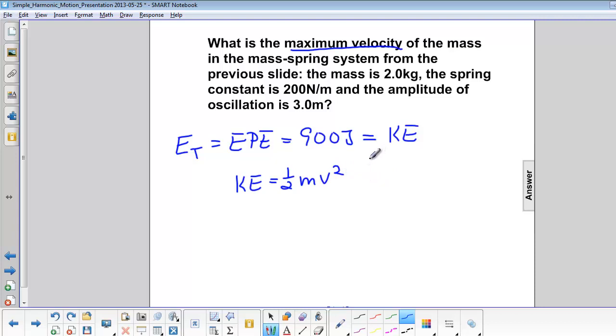In order to solve for v, we must multiply both sides by 2 so the one-half cancels the 2, and divide both sides by m so the m's cancel out, and then finally take the square root on both sides.